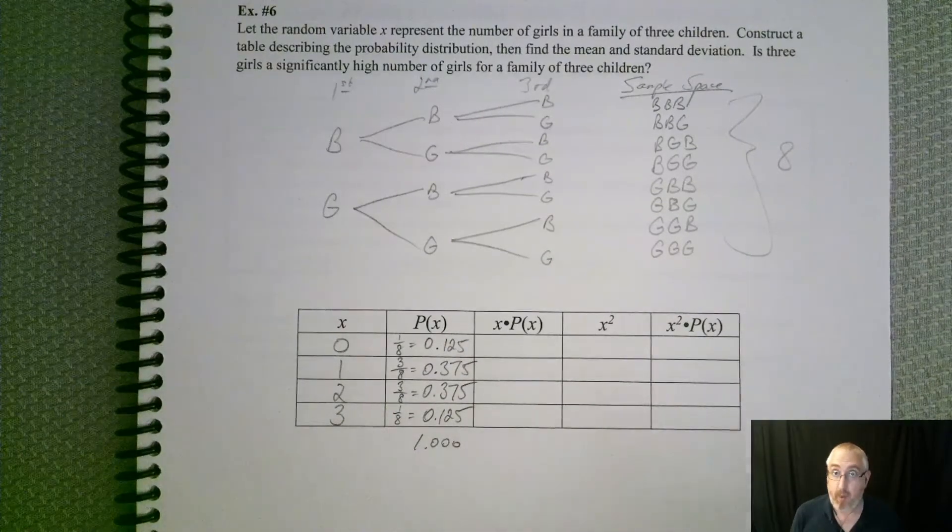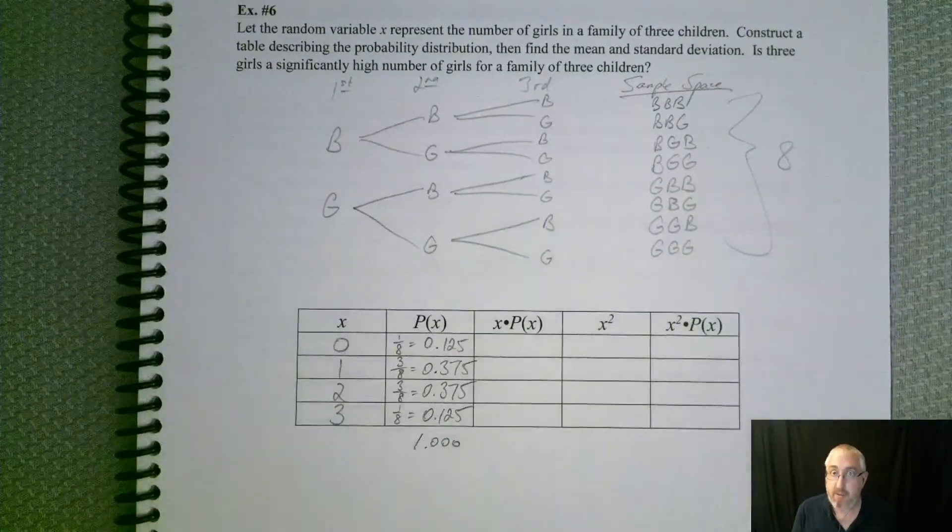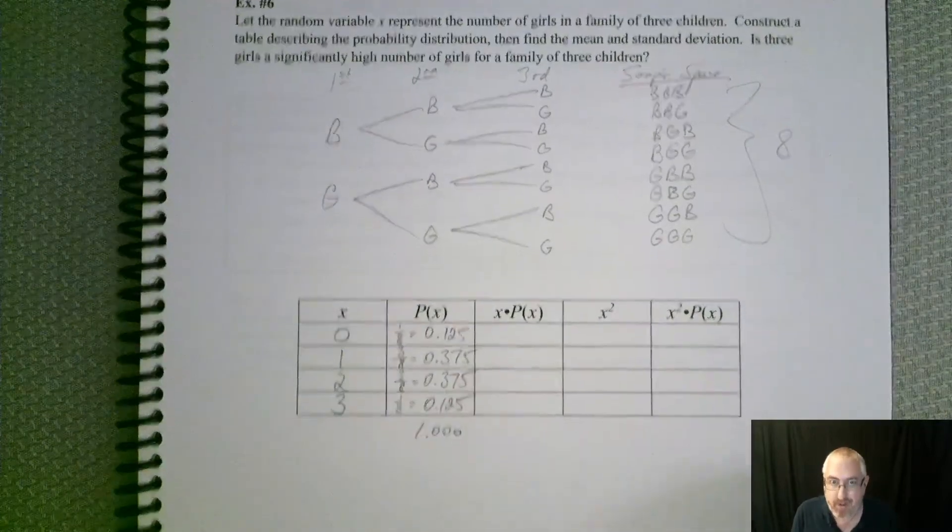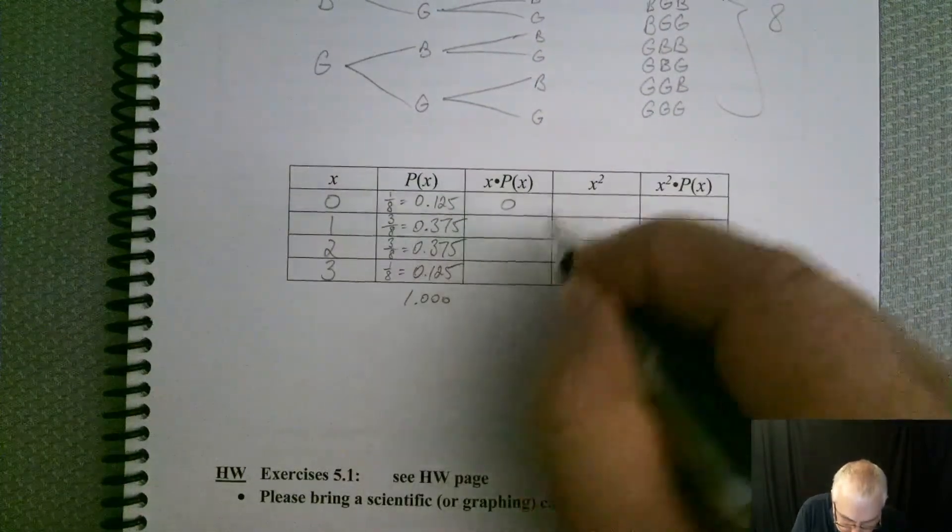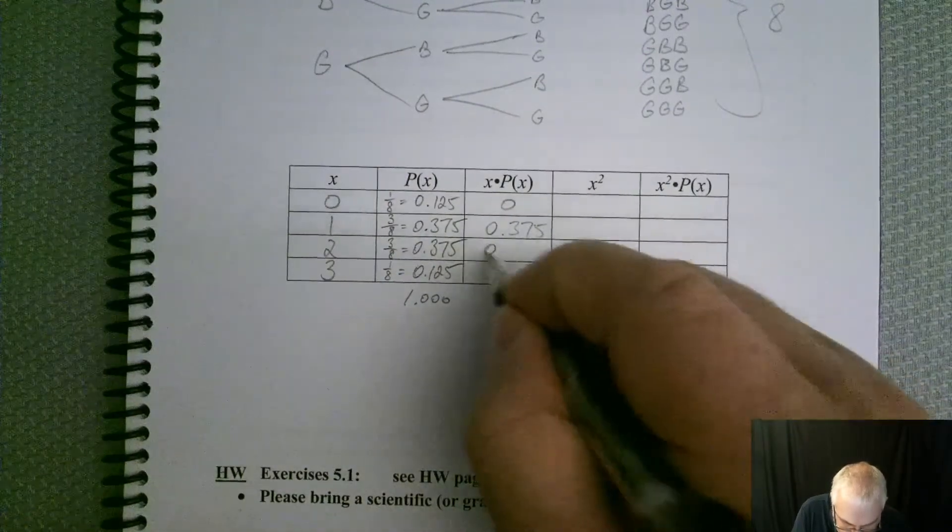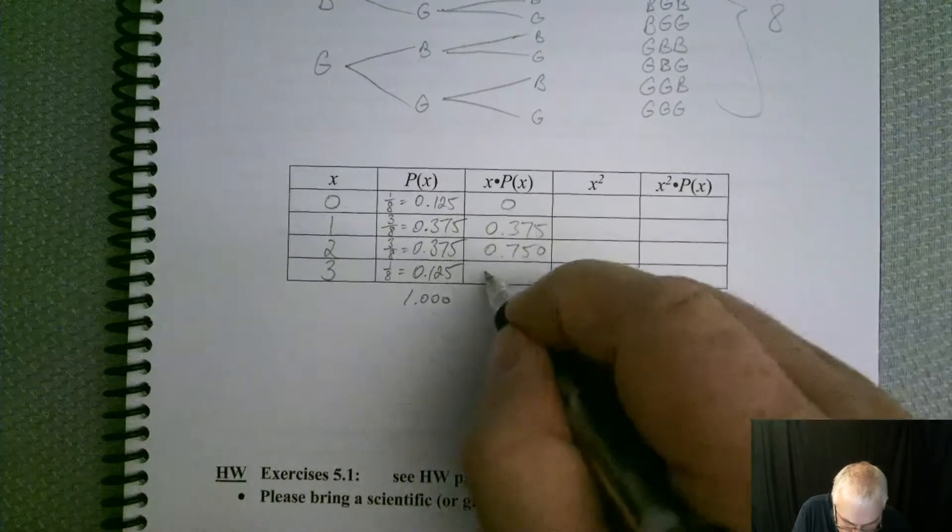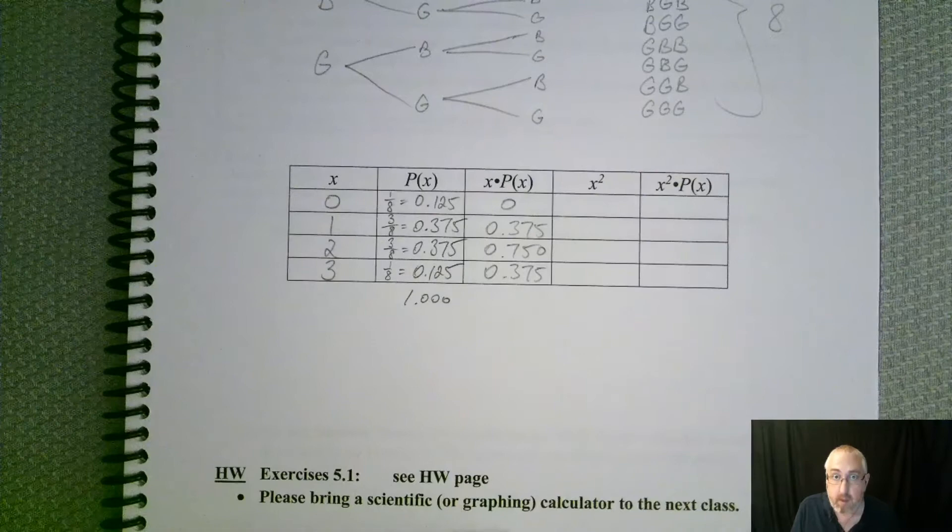So we know that that's true. Okay, so that's step one. Get your probability distribution part filled in. Now, we've got to fill in the rest of the table so we can do our means and standard deviations. So let's slide up here a little bit. So we've got 0, 0.375, 0.750, 0.375.